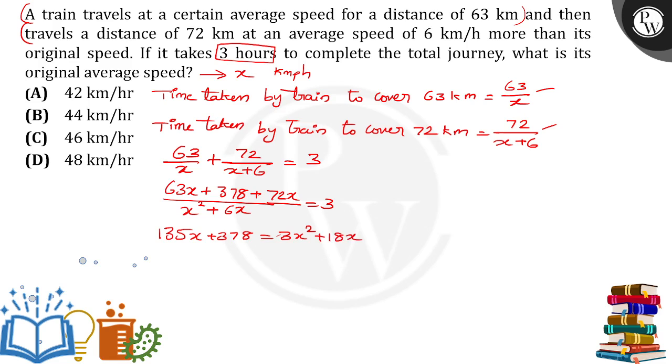Taking all values to the left side: 3x² + 18x - 135x - 378 = 0, then 3x² - 117x - 378 = 0. If I take 3 as common, then I'm left with x² - 39x - 126 = 0.